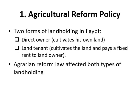There were two forms of land holding in Egypt under that period. The first is the direct owner, where the farmer cultivates his own land. The second is the land tenant, where farmers cultivate the land and pay a fixed rent to landowners. The reform law affected both types of land holding.